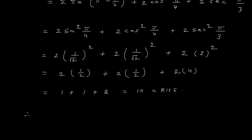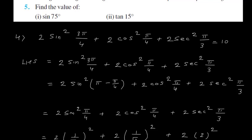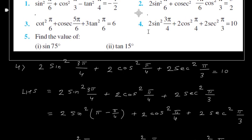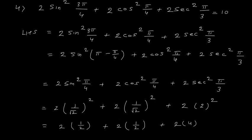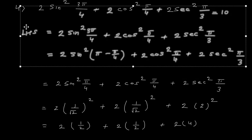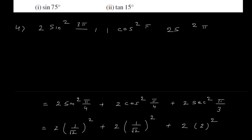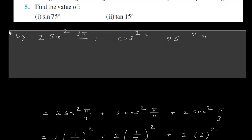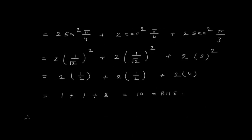Therefore LHS is equal to RHS: 2 sin square 3 pi upon 4 plus 2 cos square pi upon 4 plus 2 sec square pi upon 3 equals 10. These problems are easy — we only have to put in values. They have been given just to practice angles in radians, so by doing these problems you become very comfortable with the values of trigonometric functions in radians.